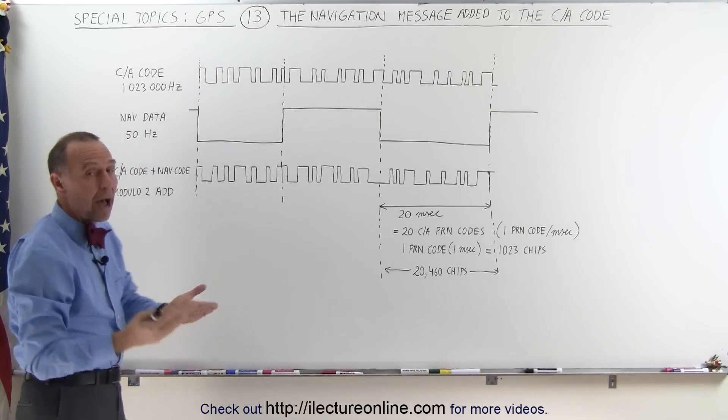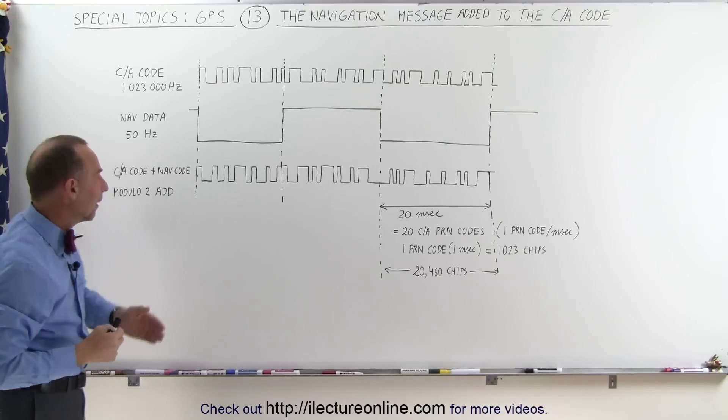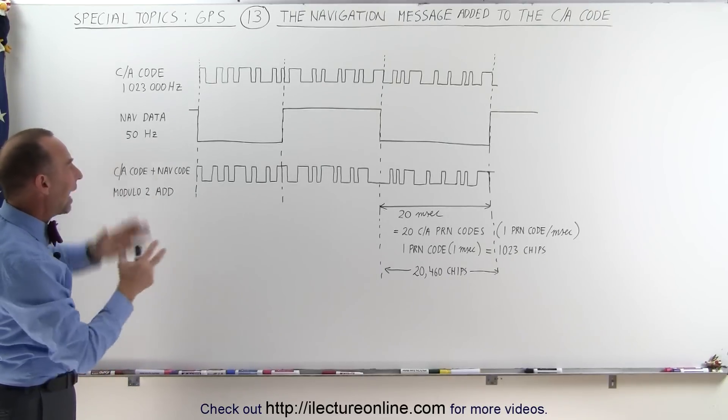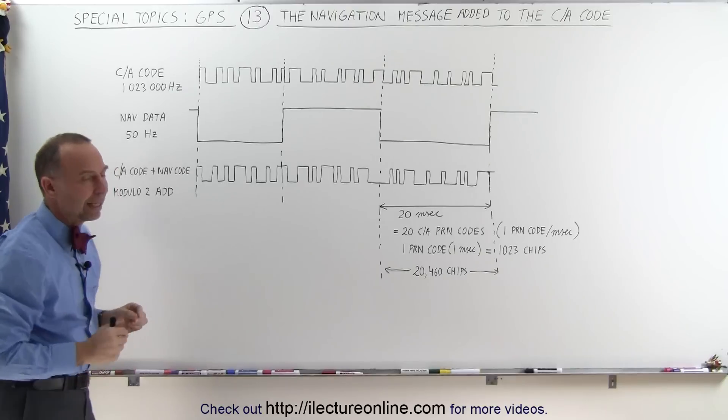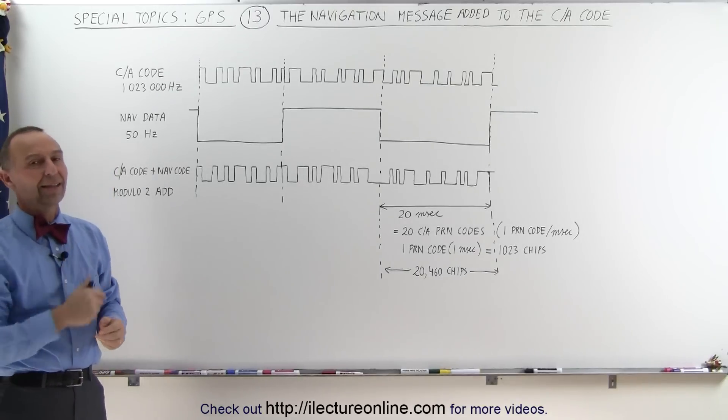Here we're just trying to illustrate how the CA code and how the navigation data gets added together, so that it can then be added to the carrier signal, and we'll show you how that's done on the next video.